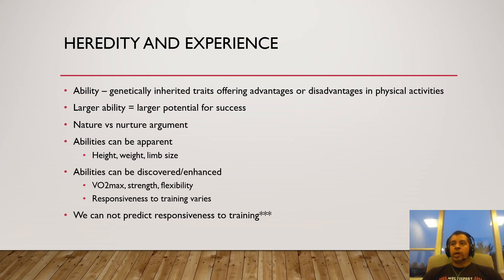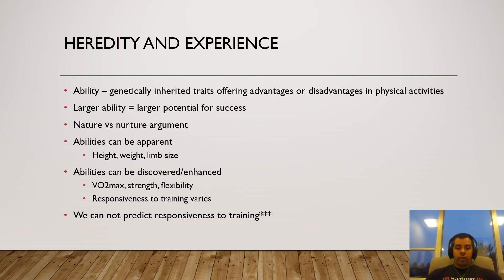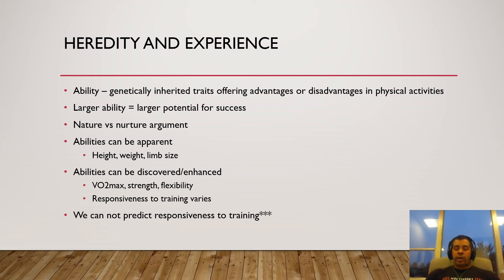Abilities can be apparent or they can be discovered. Basketball is the easiest sport where height and size matter — your average point guard is around six-three or six-four; your average center is between six-ten and seven-two. But abilities can also be discovered. The easiest example is VO2 max. You could see Lance Armstrong on the street and he'd look like your average Joe. Put him on a VO2 max test on a bike and you'd realize he has world-class ability to handle oxygen for exercise.